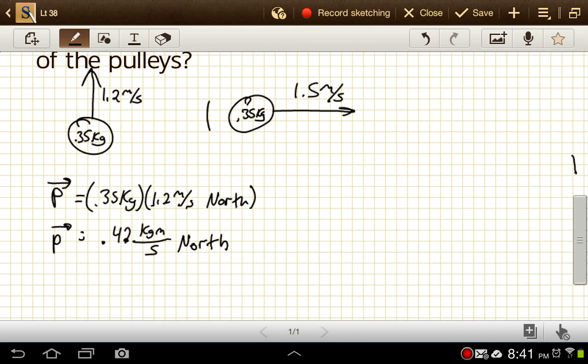And then for this one, we're going to have our momentum vector. It's going to be, again, 0.35 kilograms, it's a scalar, times our velocity vector.